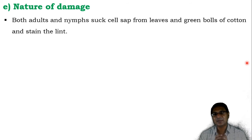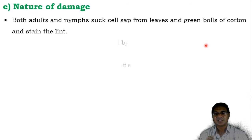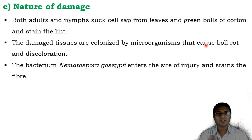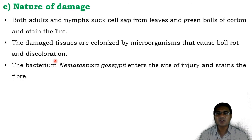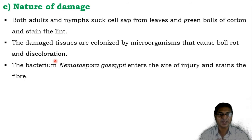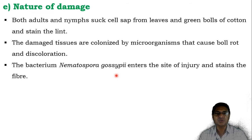Both adults and nymphs, having the piercing and sucking type of mouth parts, suck the cell sap from the leaves and the green bolls of the cotton and stain the lint. The damaged tissue is colonized by microorganisms that cause boll rot and discoloration. The bacterium Nematospora gossypii enters the site of injury where the sap is sucked and stains the fiber — its colony continuously increases at the site of injury, causing the red stain to appear.